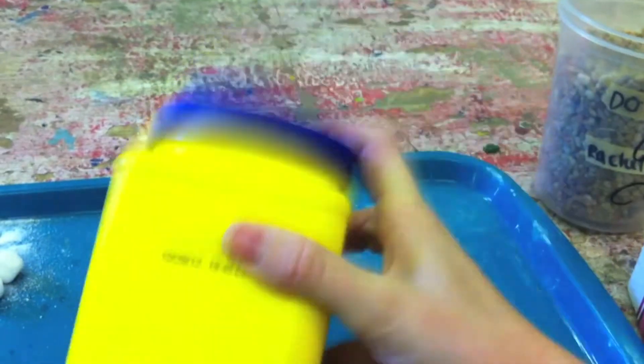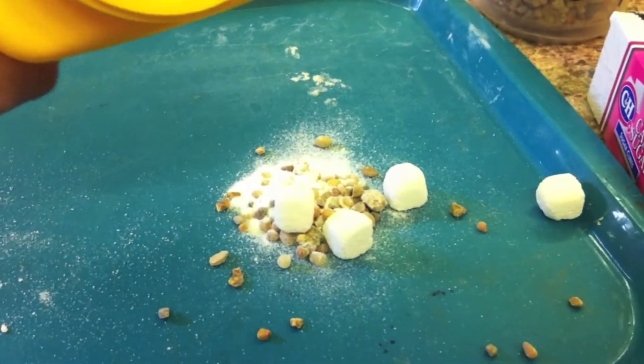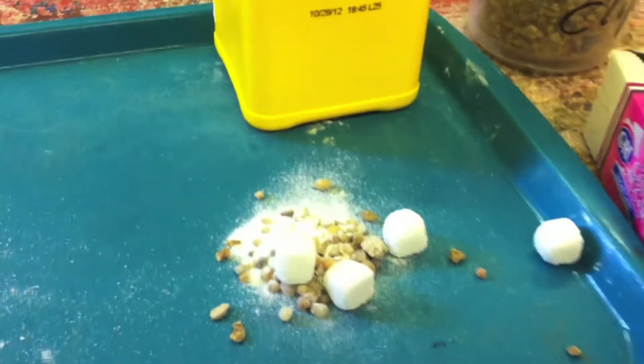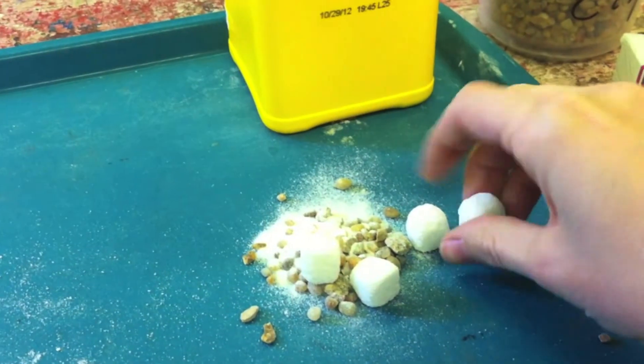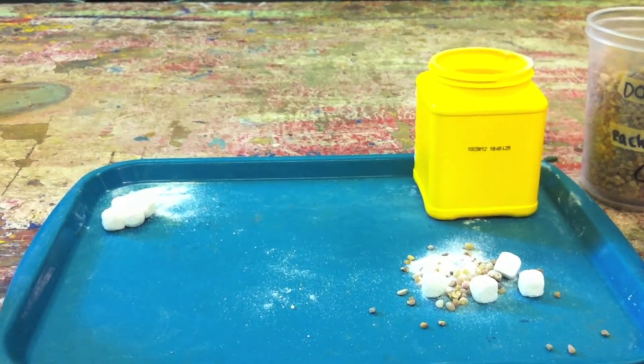Place the lid on and shake for 60 seconds. Pour the contents out onto the other side of the tray. Like before, look at the shape of the rock and look at the sediment. Compare the shape of the sugar rocks and the sediments from the two experiments.